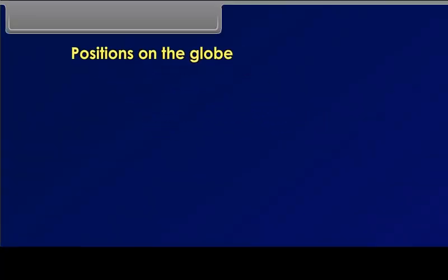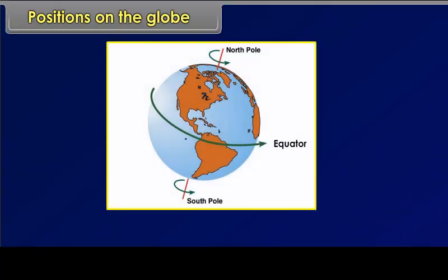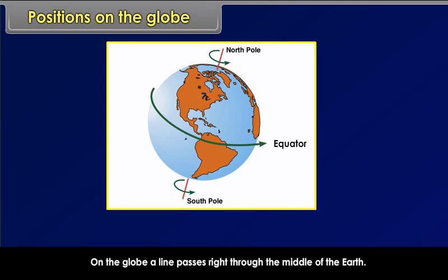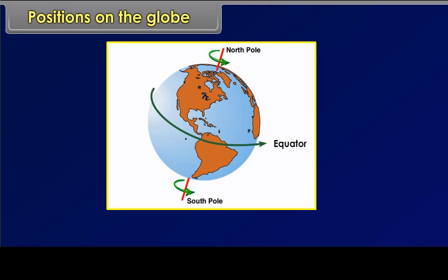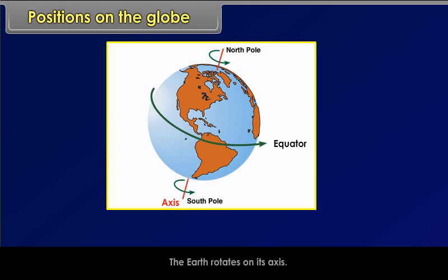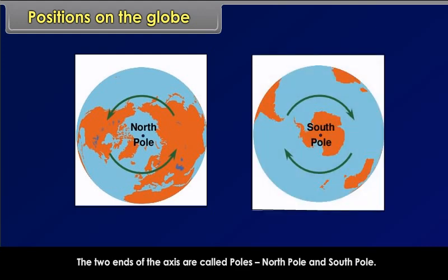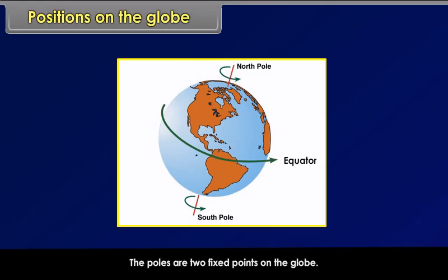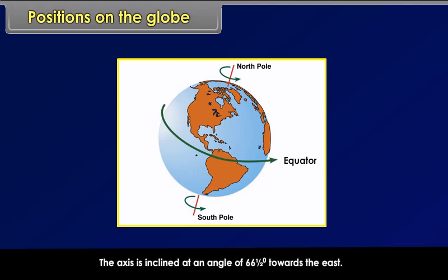Positions on the globe: On the globe, a line passes right through the middle of the earth. In reality, this line is imaginary and is known as the axis. The earth rotates on its axis. The two ends of the axis are called poles — north pole and south pole. The poles are two fixed points on the globe. The axis is inclined at an angle of 66 and a half degrees towards the east.